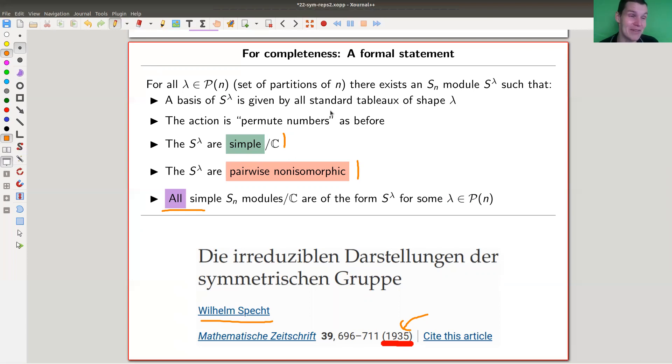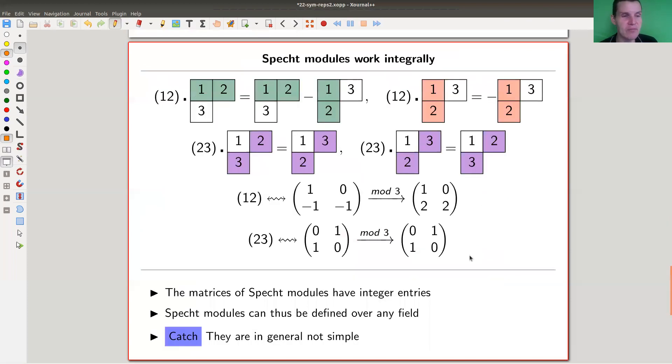The bijection itself from Young tableaux to simple modules was known to Frobenius, but to write down those modules explicitly in terms of tableaux is a bit painful because it's not quite the eigenvalue one, eigenvalue minus one, and permutation operations. But otherwise, the statement is pretty smooth, pretty nice. You get all simple modules, and they're pairwise non-isomorphic—we have the perfect classification.